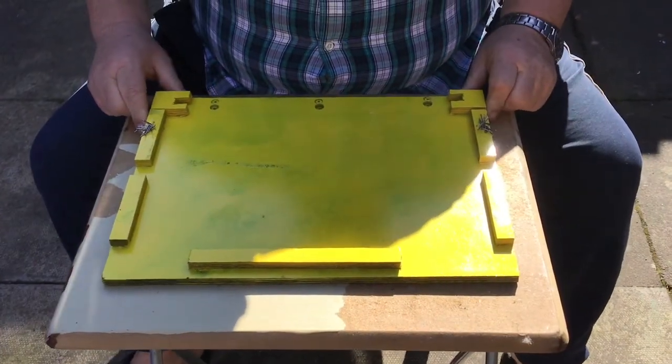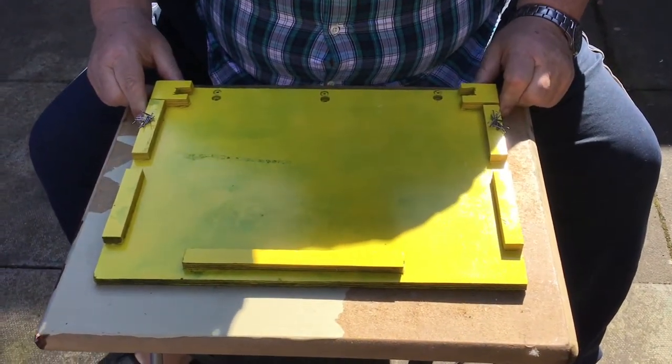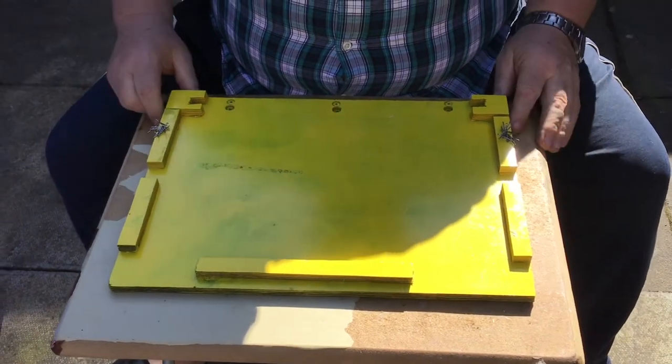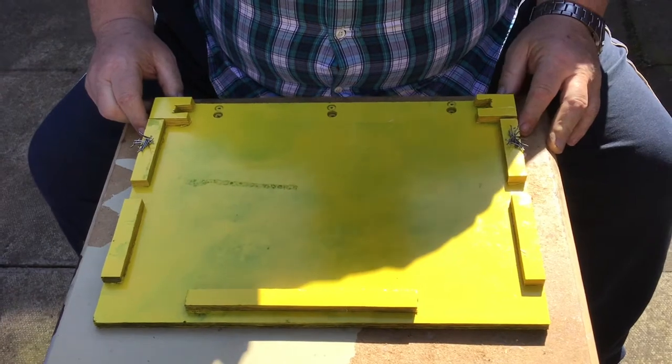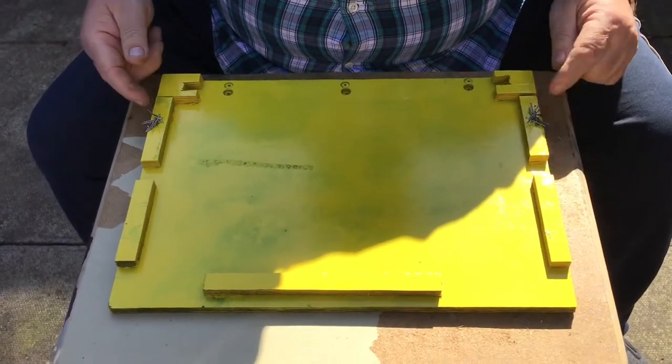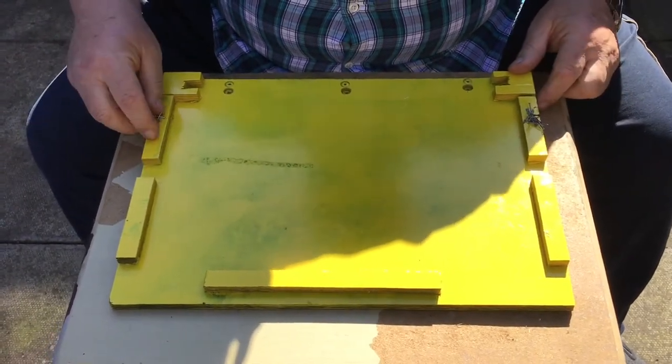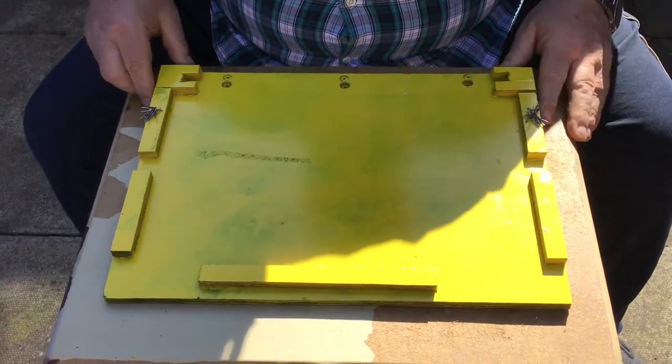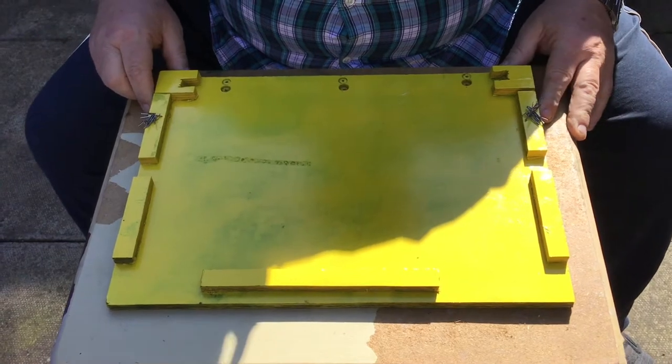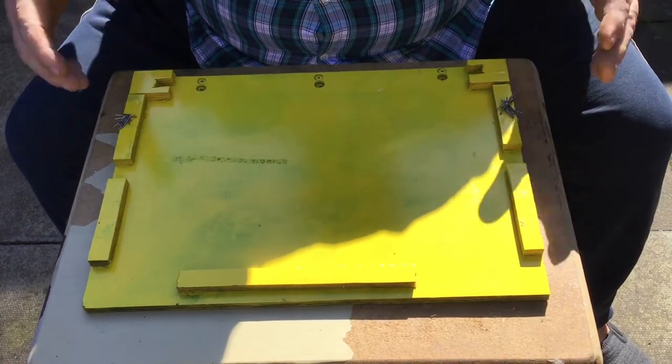This is my little jig for making up frames, making up supers or broodbox frames. If you notice here I've got a little magnet embedded in here holding different size nails, so everything's there for a reason and we'll run through the construction of a frame using this jig.